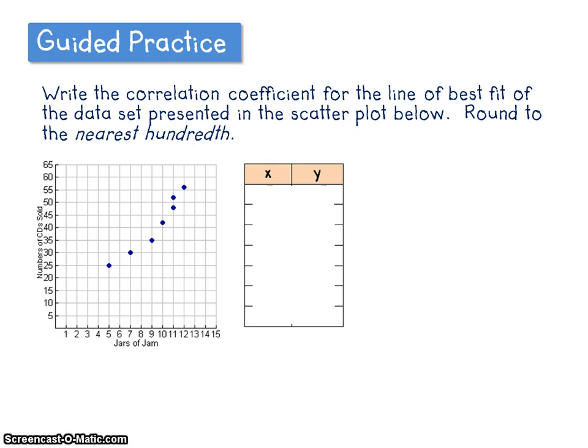So let's take a look at the very first point. I highlighted it for you. I see that point has an x value of 5, 5 jars of jam, and a y value of 25, representing 25 numbers of CDs sold. So my first part of my table will say 5, 25. I'd like you to pause the video and complete the rest of the table, and then you can press play when you're done.